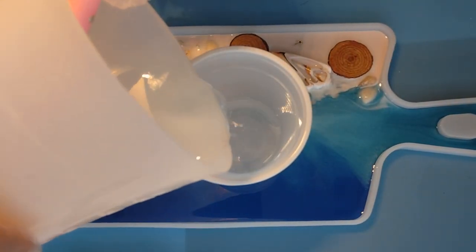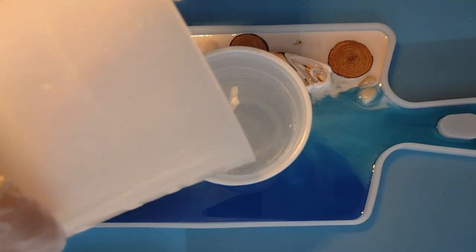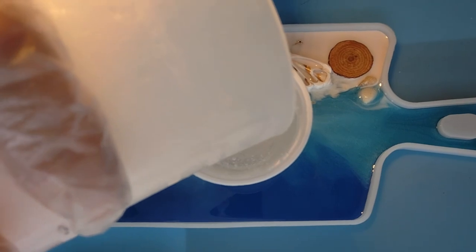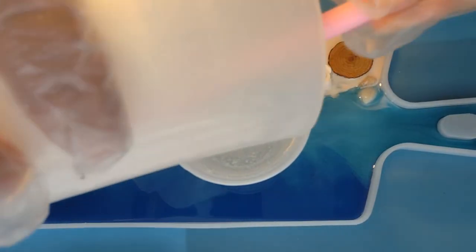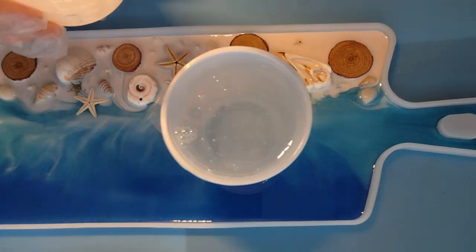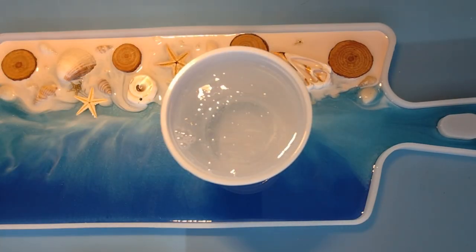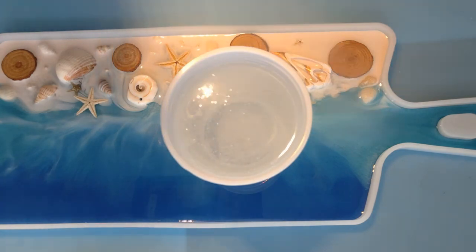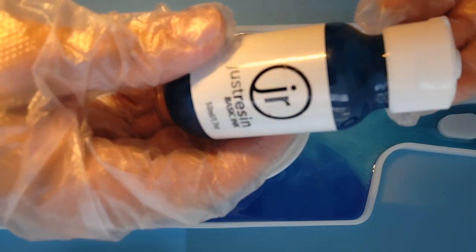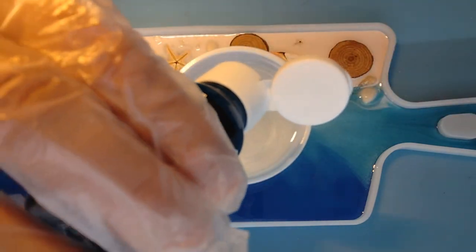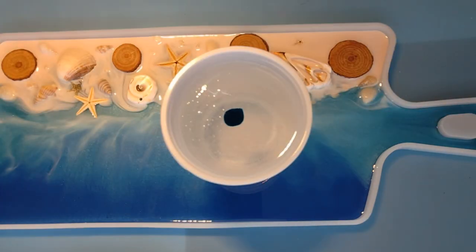For my second layer of resin, I will be using just resin turquoise pigment drops. And I just used one drop, as I wanted my resin to be transparent.